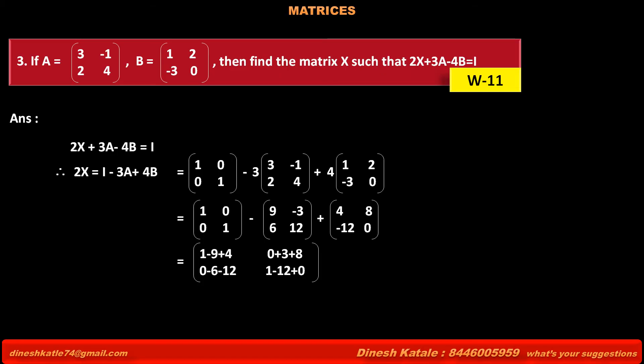Subtracting and adding corresponding elements, we get 1 - 9 + 4, 0 + 3 + 20, 0 - 6 - 12, and 1 - 12 + 0. Solving this gives [-4, 23; -18, -11]. That is, 2X = [-4, 23; -18, -11].